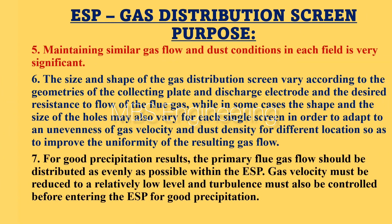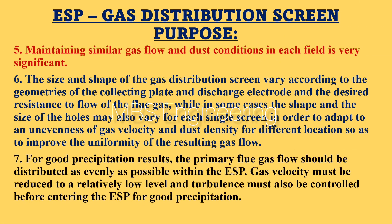Point 7: for good precipitation results, the primary flue gas flow should be distributed as evenly as possible within the ESP. Gas velocity must be reduced to a relatively low level, and turbulence must also be controlled before entering the ESP for good precipitation results.